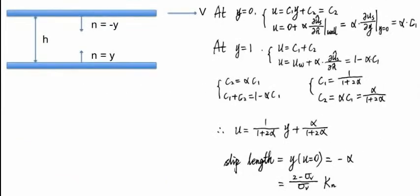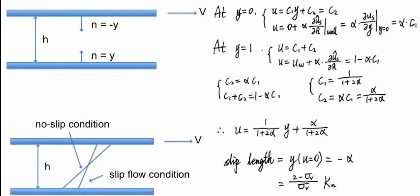Boundaries at y equals zero and y equals one provide the relationship between c1 and c2. After solving the equations, we extrapolate the flow velocity profile to zero and get the slip length expression.